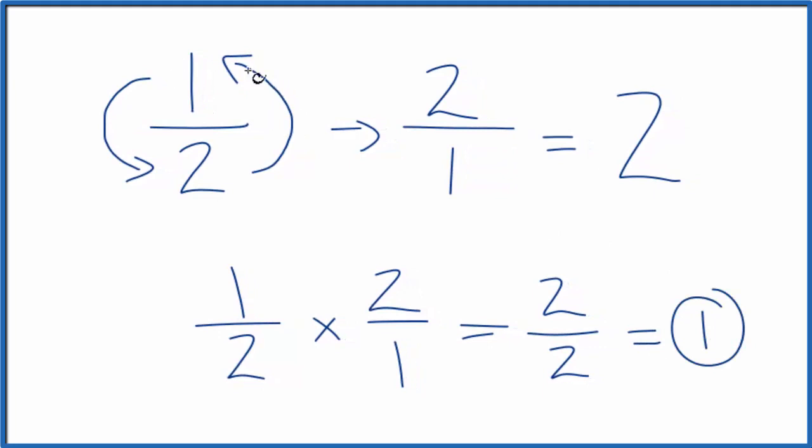So when we multiply our original number by the reciprocal, and we get 1, we know we did it correctly. This is Dr. B finding the reciprocal for 1 half. It's 2 over 1, or you could call it 2.